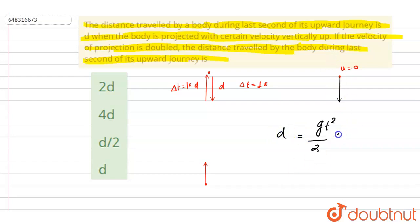Right, so if you see in one second how much it traveled. So if you change the initial speed, nothing will change because if you see the symmetry: